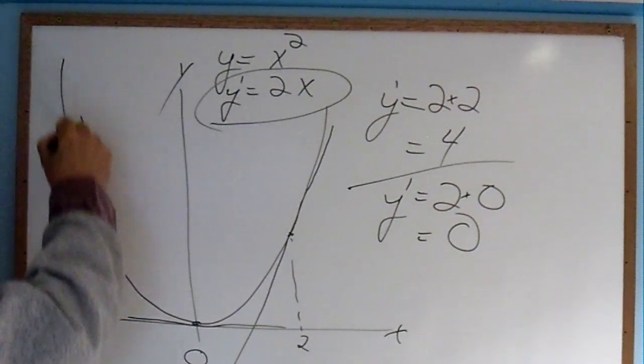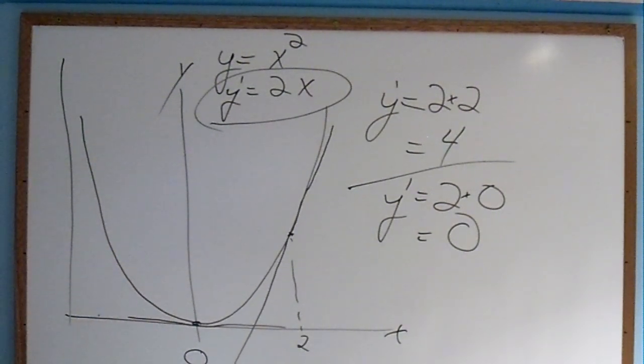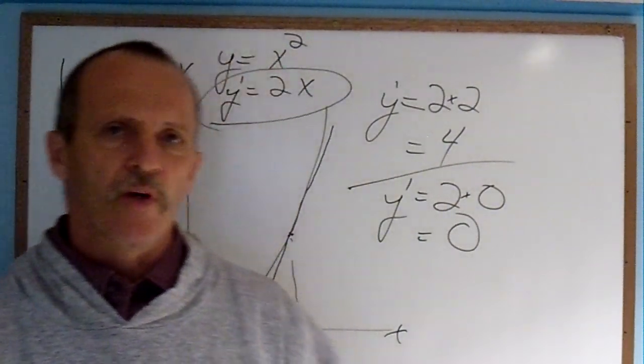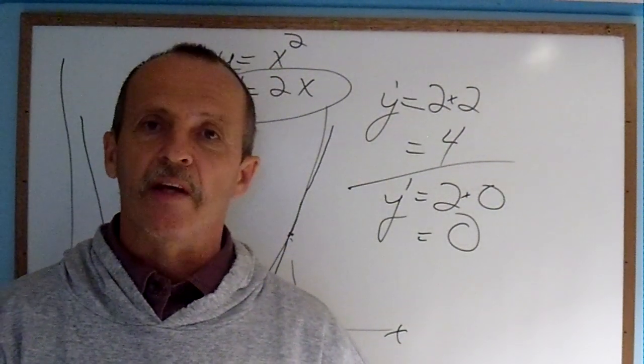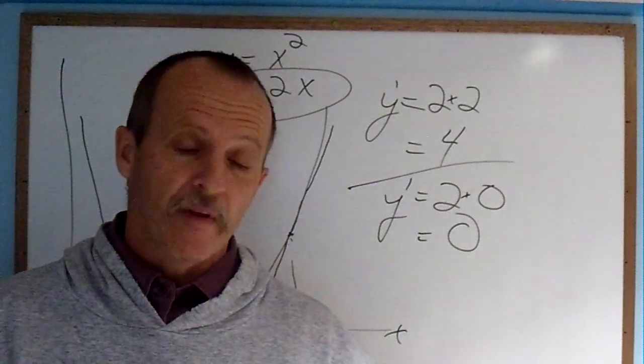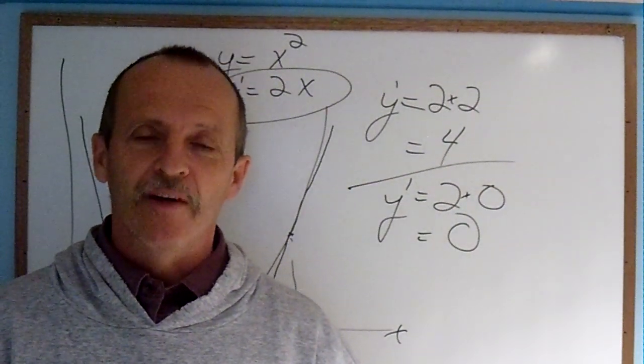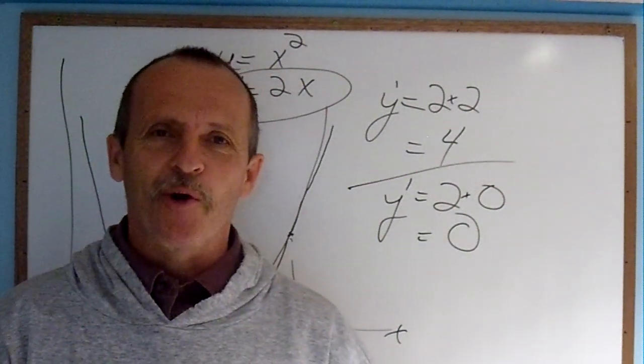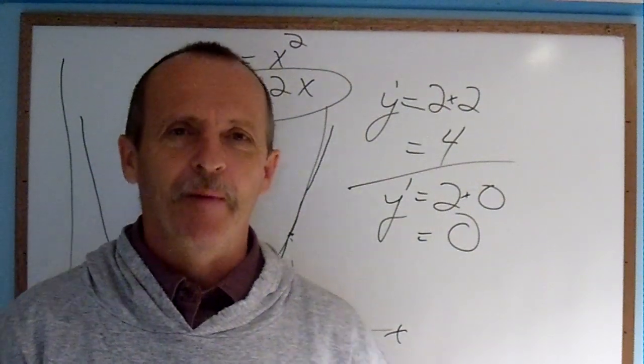And the slope of a vertical line is infinite. There you have it. A quick and short explanation for what is a derivative. The slope at a point on a line or on a curve. Thanks for watching. Bye-bye.